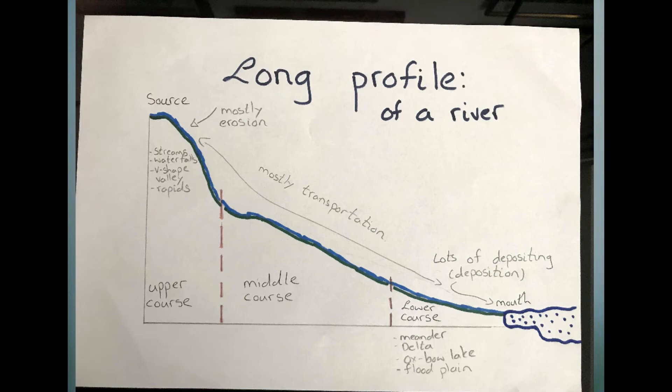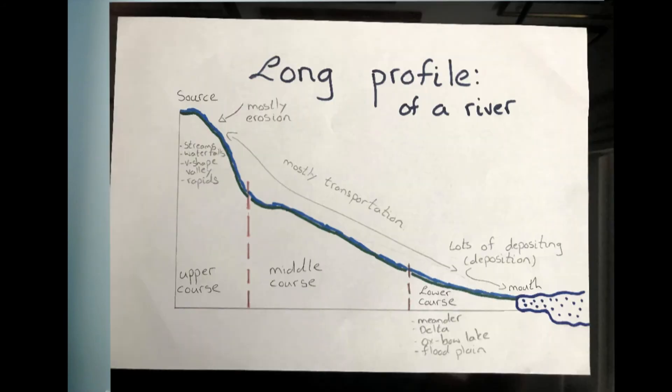We then have the middle course. This is where the angle is not quite as steep, and there are a lot more rivers coming together, so the flow is starting to slow down, but it's still going downhill. You will still see rapids and waterfalls, but you might also start to see some meanders and floodplains starting to appear.